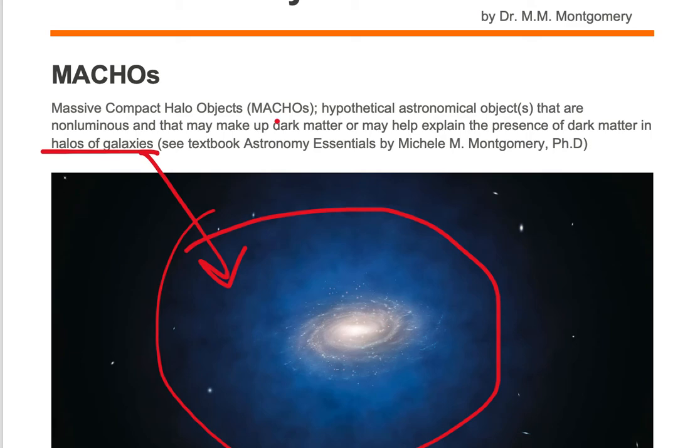Now MACHOs may be an example of a hypothetical object that is non-luminous and that may make up the dark matter in blue or may help explain the presence of this dark matter that is surrounding the visible Milky Way galaxy and is in the halo of the Milky Way galaxy.